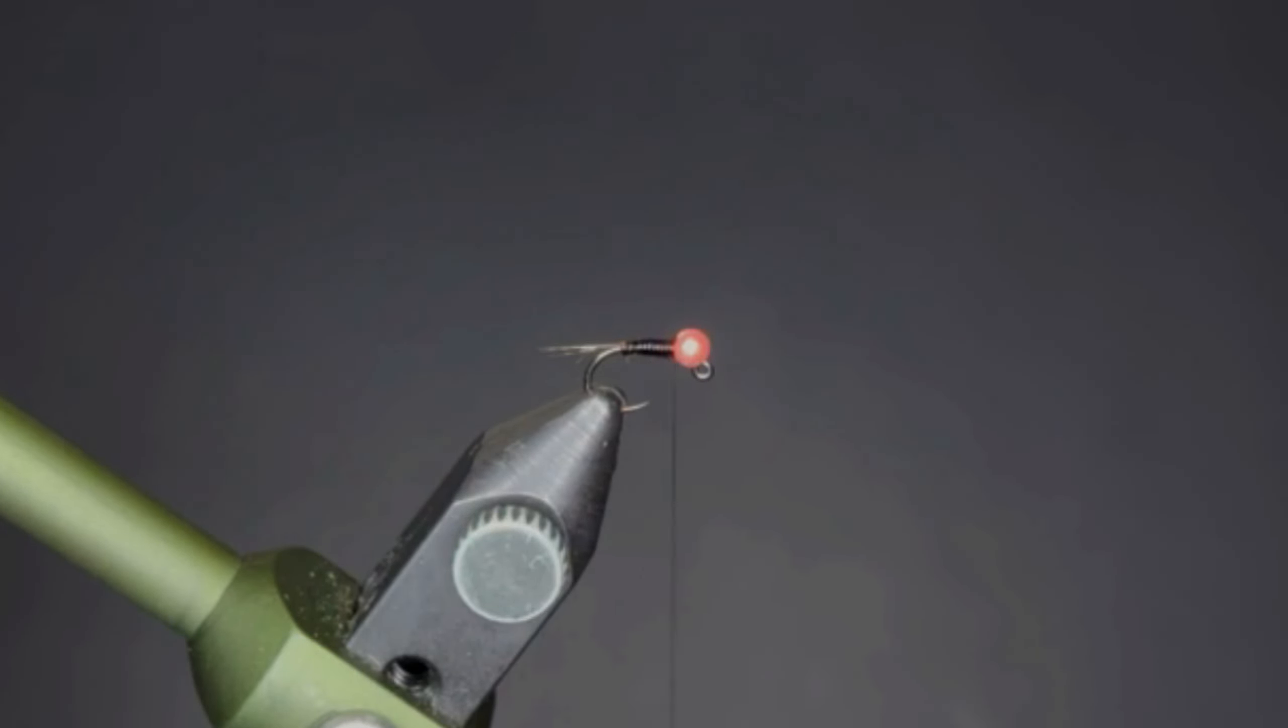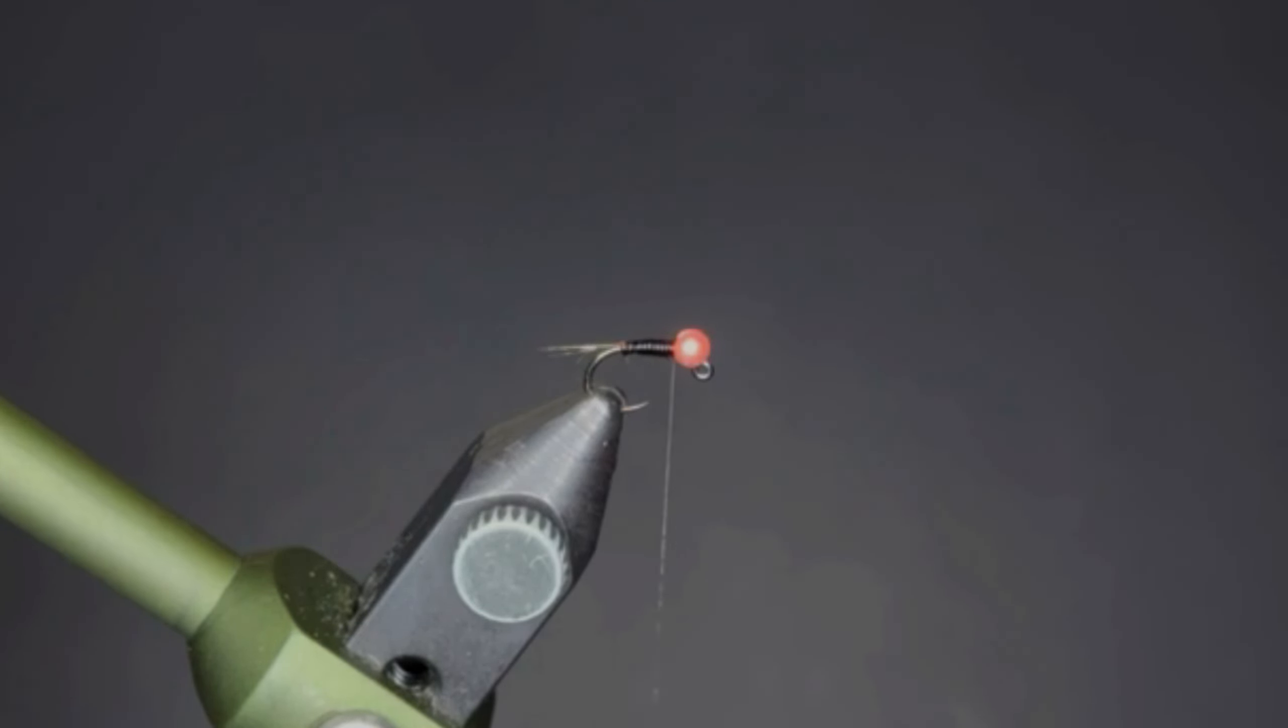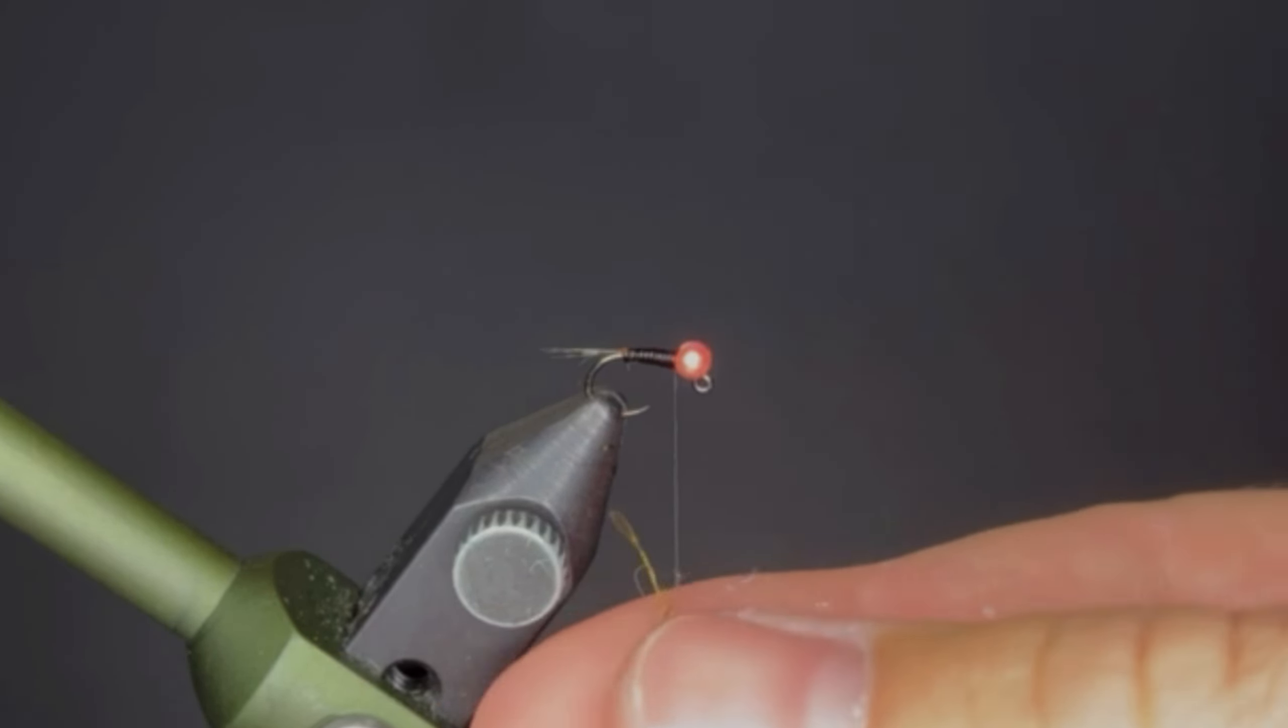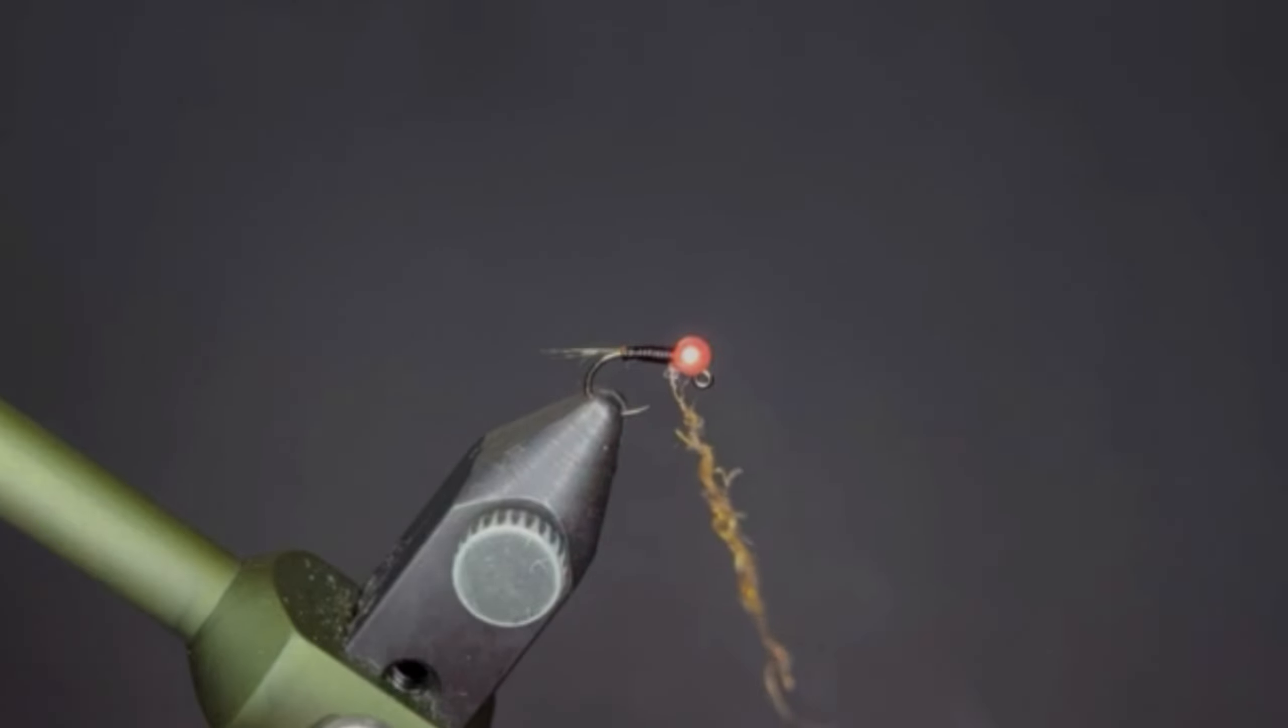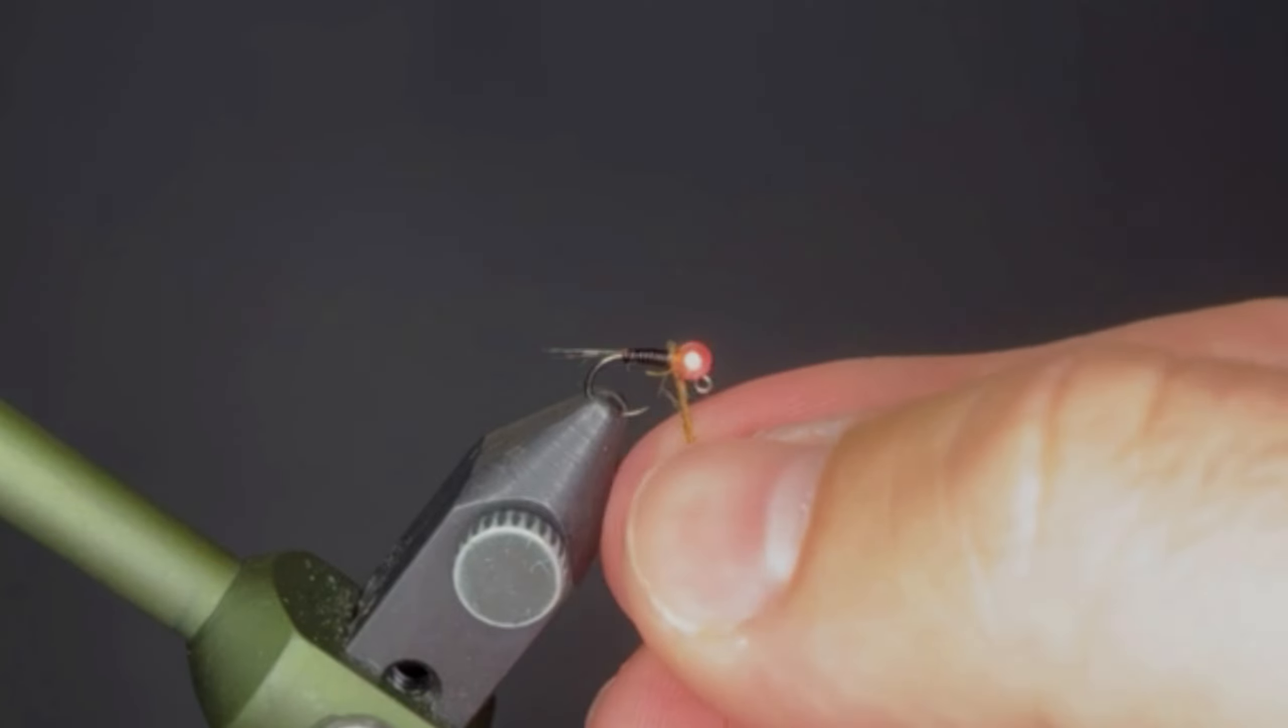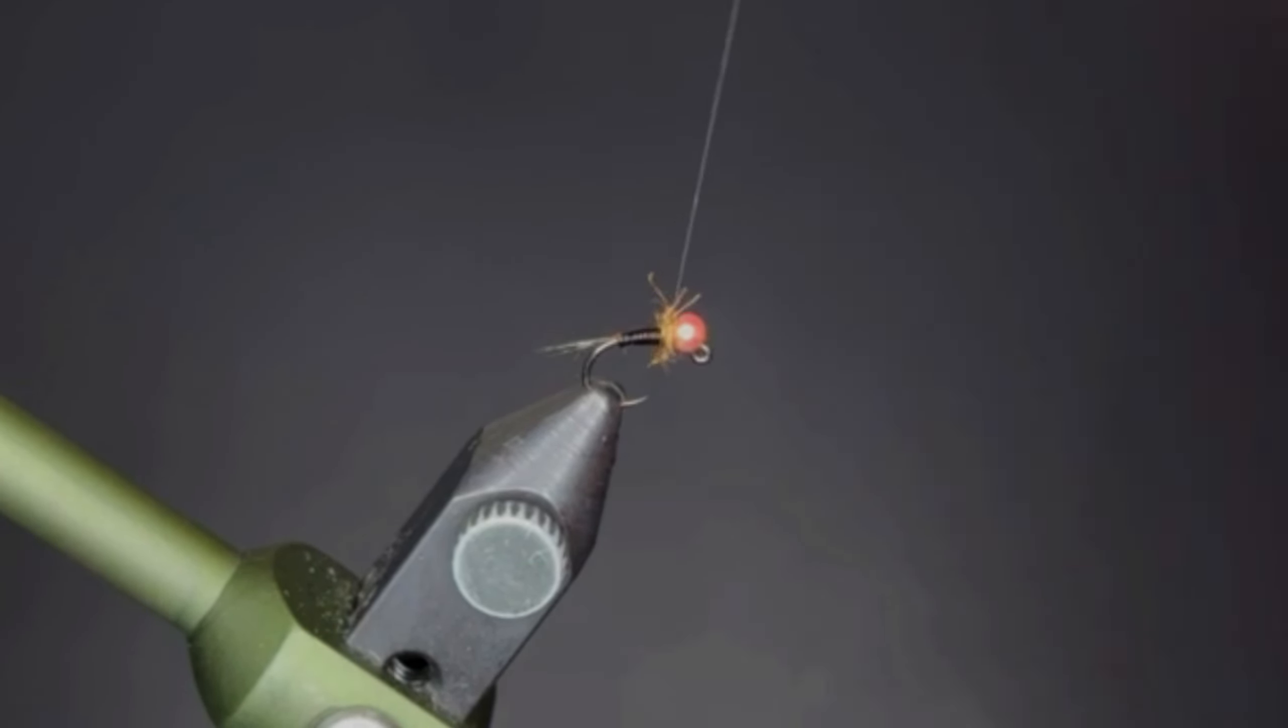This is red fox squirrel thorax, kind of a golden brown lighter flash. It's super buggy looking and I really liked that variant on this particular fly. Again, you can do all kinds of different color variations, really the sky's the limit. We're just going to dub a nice little thorax behind this bead.